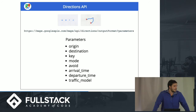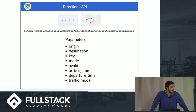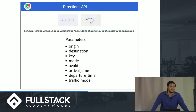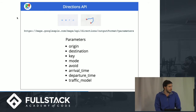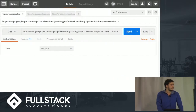There are many other things you can incorporate: mode of transport, whether you want to avoid traffic, arrival time, and a traffic model — which is pretty cool — where you can set optimistic, pessimistic, or best guess.